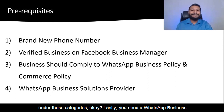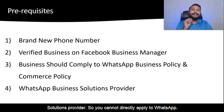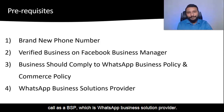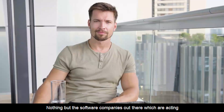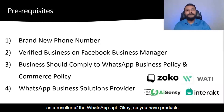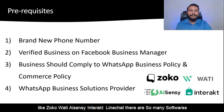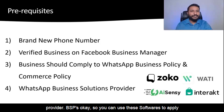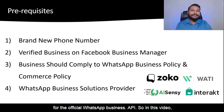Lastly, you need a WhatsApp Business Solutions Provider. You cannot directly apply to WhatsApp for the API — it has to come through what we call a BSP, which is a WhatsApp Business Solution Provider. These are software companies acting as resellers of the WhatsApp API. You have products like Zoco, Wati, AISNC, Interact, Limechat — there are so many softwares today in the market which are WhatsApp Business Solution Provider BSPs. You can use these softwares to apply for the official WhatsApp Business API.